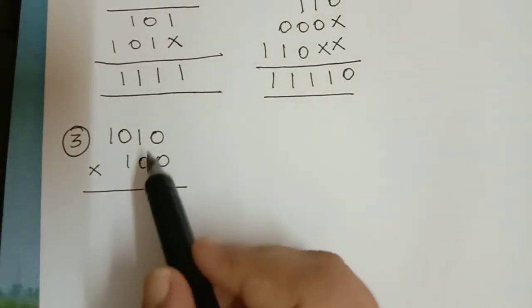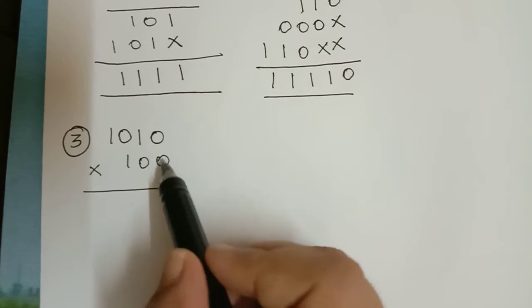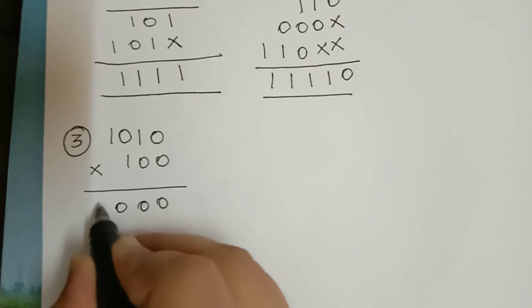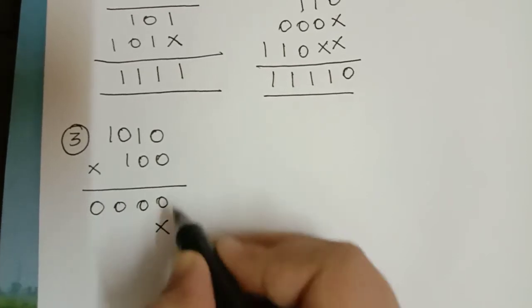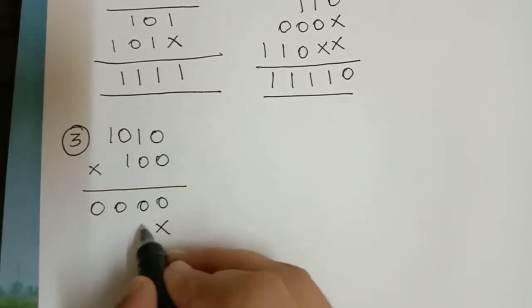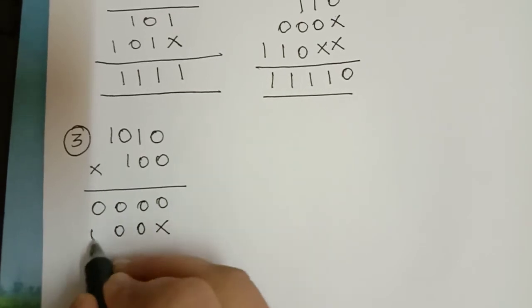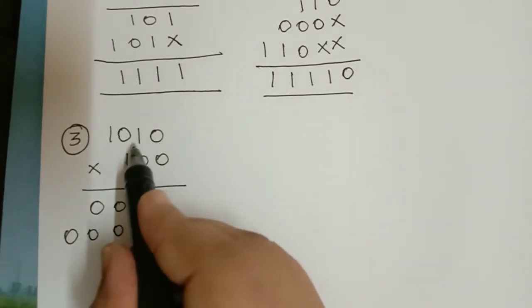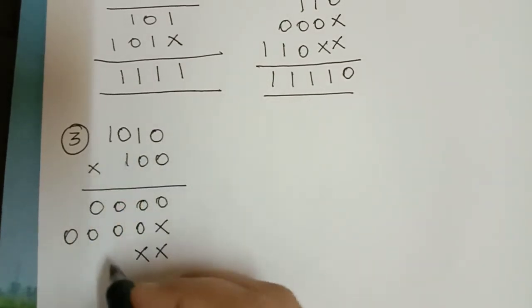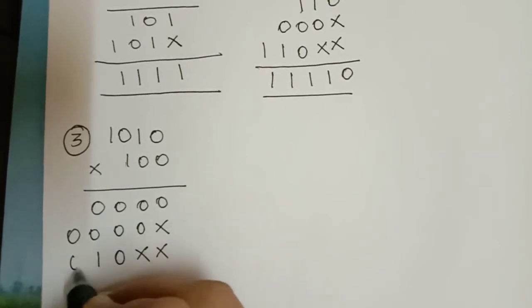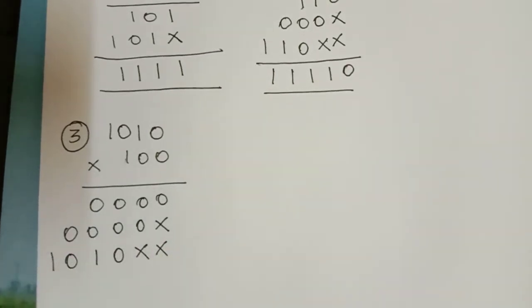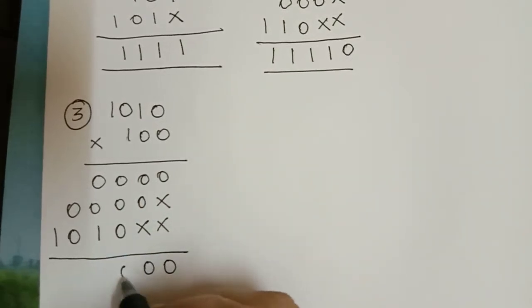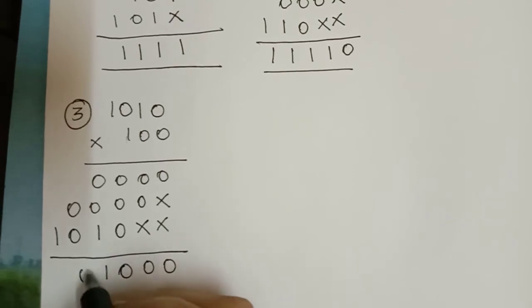Now we shall multiply these 2 binary numbers. Because we have 0 here and there are 4 digits, we get 0,0,0,0. The second digit is also 0, so when we multiply with 0 we get 4 zeros. Then the third digit is 1, so 1 multiplied with these numbers gives the number the same. Adding all these numbers we get 0,0,0,1,0,1.